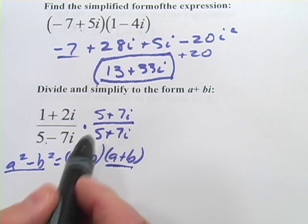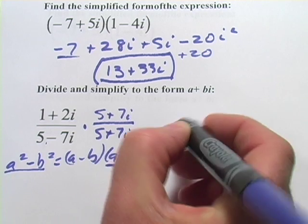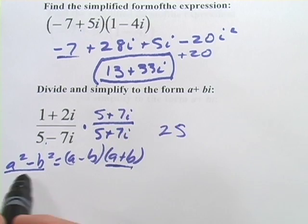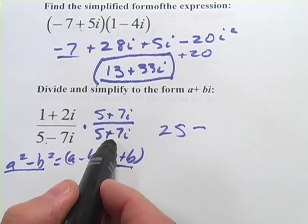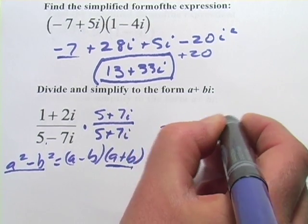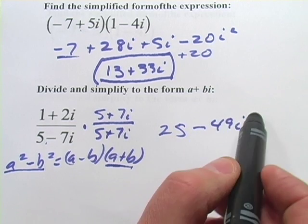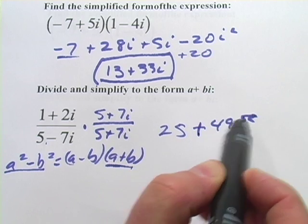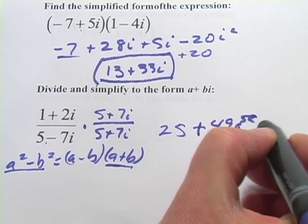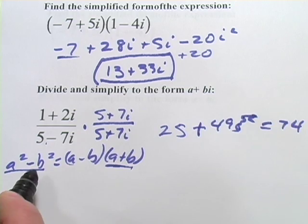Let's do that. On the bottom first, it's going to be a² - b². So it'll be 25 - 49i². But again, i² is -1, so it's really like 25 + 49, which is 74. So that's what's on the bottom.